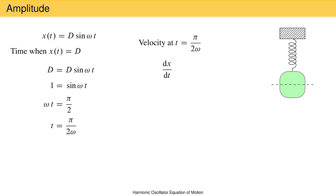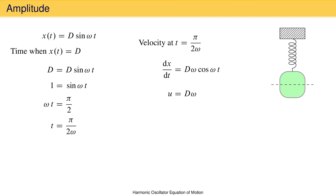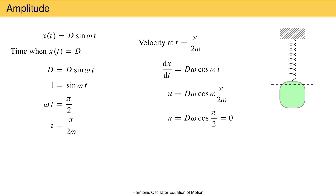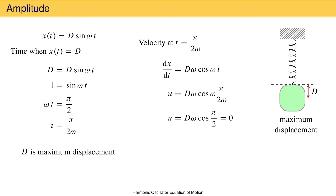Now we find the velocity at this time. Velocity is the derivative of displacement with respect to time, and taking the derivative of d sine omega t gives d times omega times cosine omega t. Substituting t equal to pi over two omega gives velocity equal to d omega times cosine of pi over two. The cosine of pi over two is zero, so the velocity equals zero when displacement equals d. Physically, a velocity of zero means the mass changes direction — this is a turning point, and the displacement at which it occurs is the maximum displacement of the mass. The constant d is therefore the maximum displacement, called the amplitude.